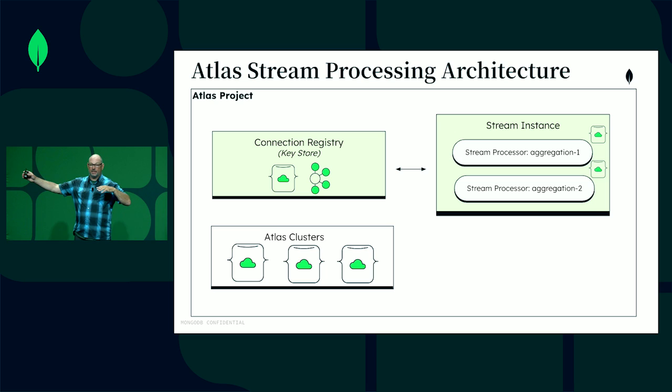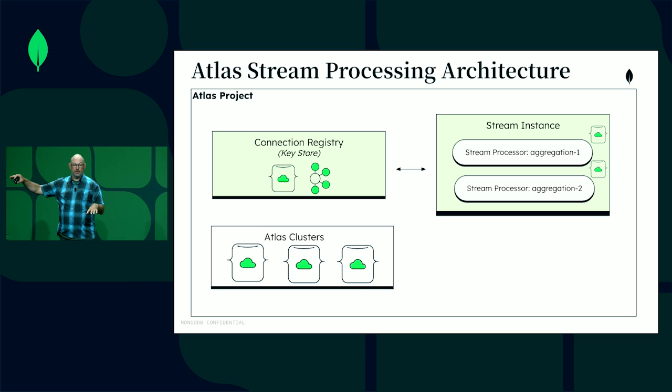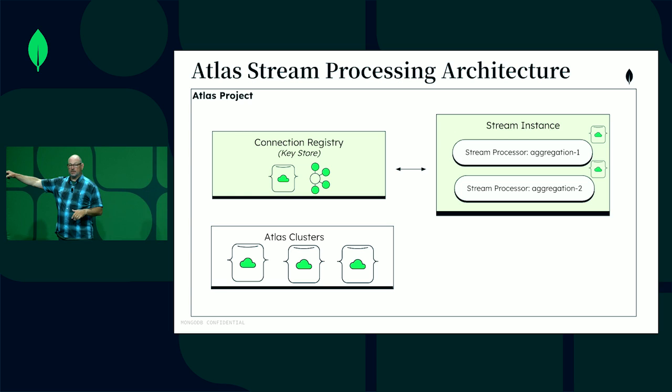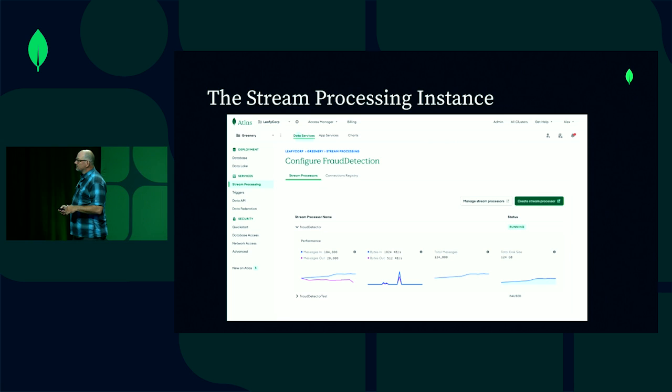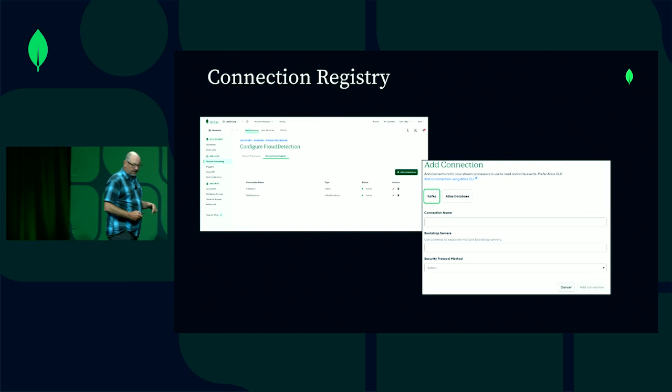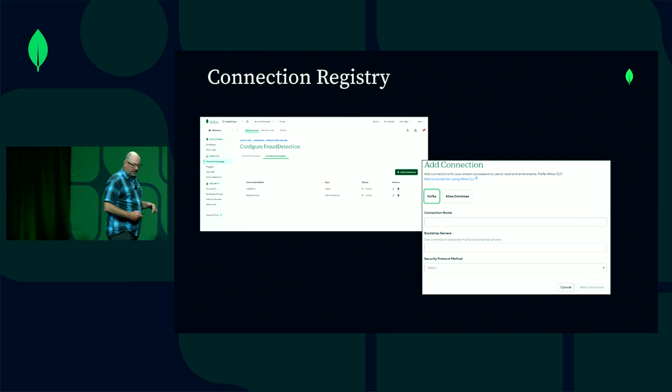And then lastly we have our Atlas clusters. Stream processing on Atlas is separate from your database. We still have database clusters just like we always have — stream processing is something different. You can use a database as you always have, and also fire up instances and run stream processors. Here's a quick screenshot of what it looks like in Atlas. Here's that connection registry — you can see there's a button for adding Kafka and giving a connection, where you provide something like the bootstrap servers.